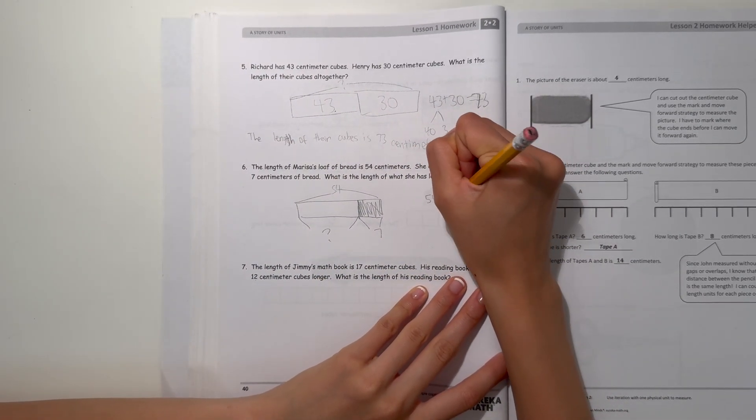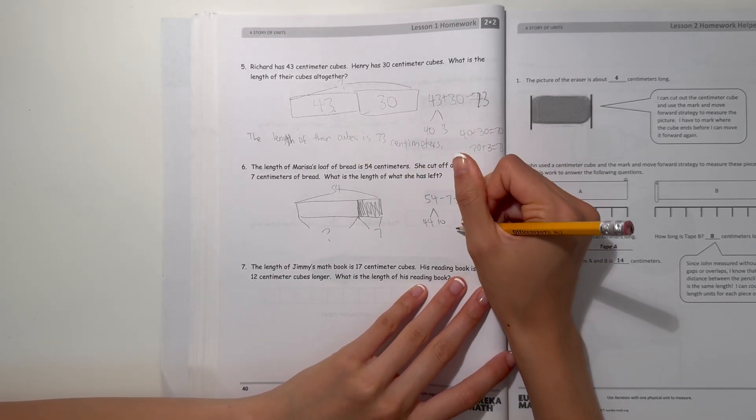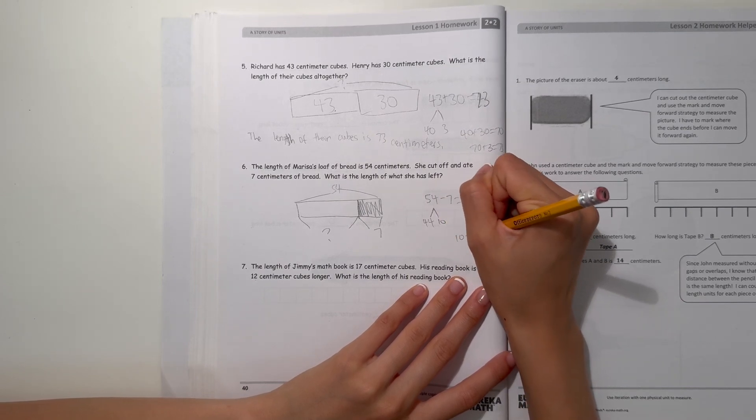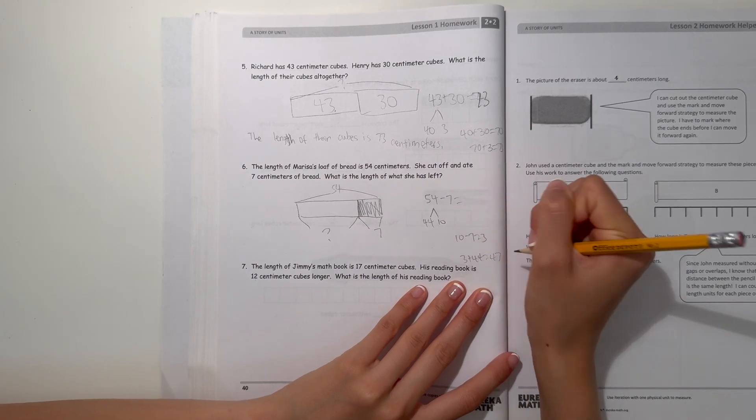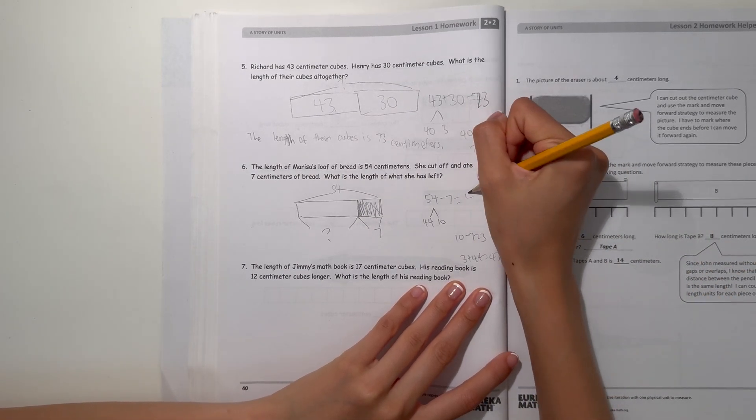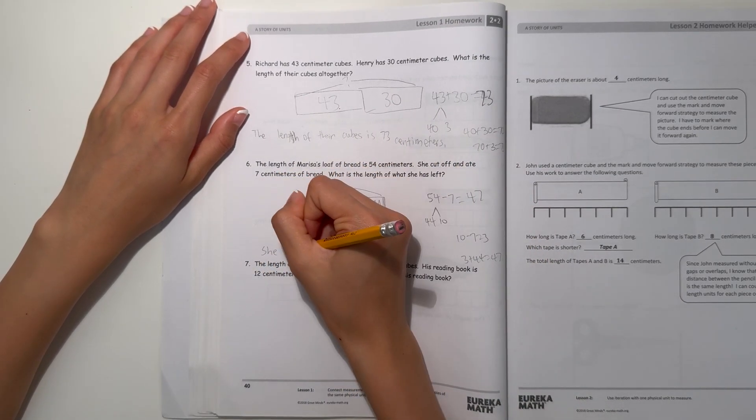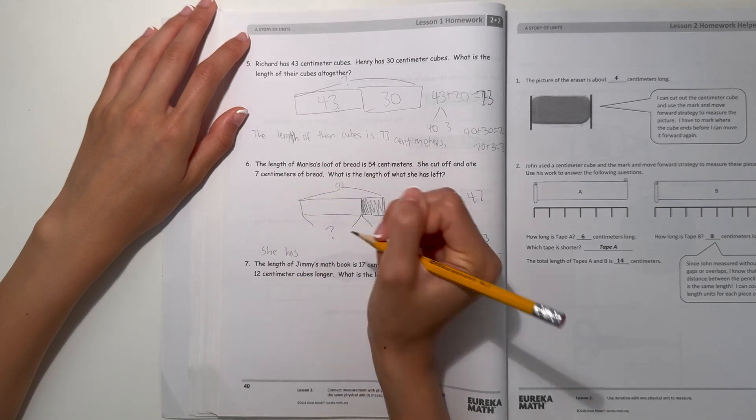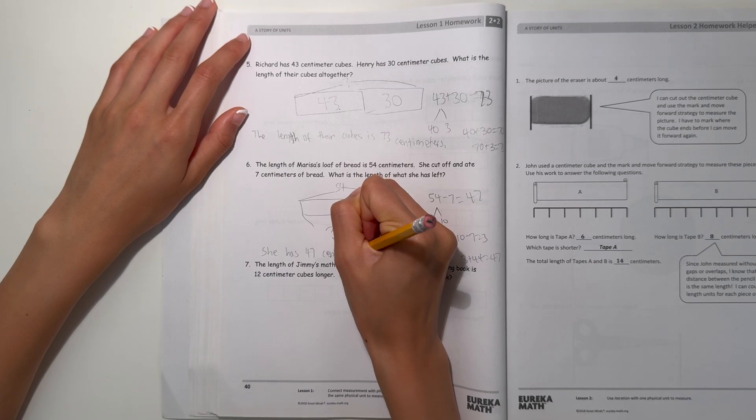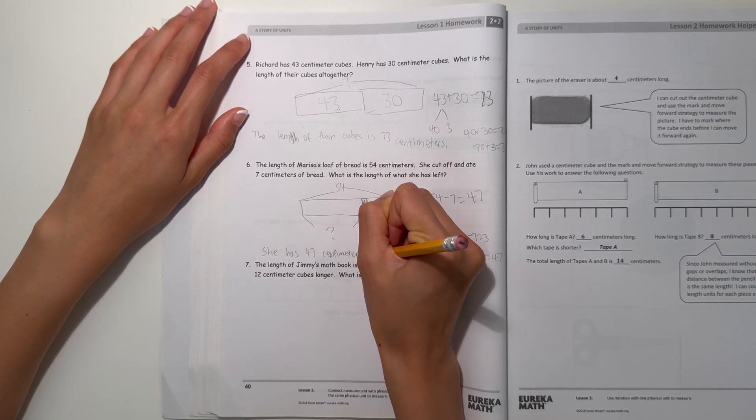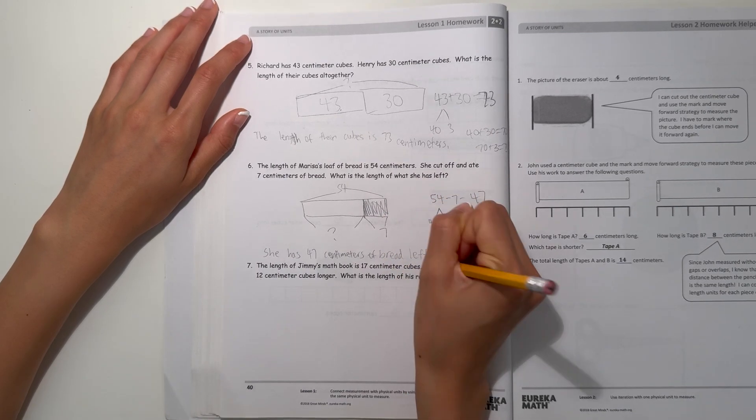We do 54 minus 7. Using the take out 10 strategy, there's 44 left. 10 minus 7 is 3, and 3 plus 44 is 47. So 54 minus 7 is 47. She has 47 centimeters of bread left.